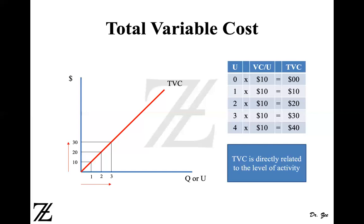This direct relationship can be seen in the example of number of miles driven — the more mileage you drive, the more your gasoline cost. Or if you go to a grocery store and buy one apple for $1, you pay $1. If you buy two apples, you pay $2. The more labor hours a worker incurs, the more you have to pay. If they earn $10 an hour and work one hour, you pay $10; two hours, $20. So the total variable cost varies directly with the level of activity.